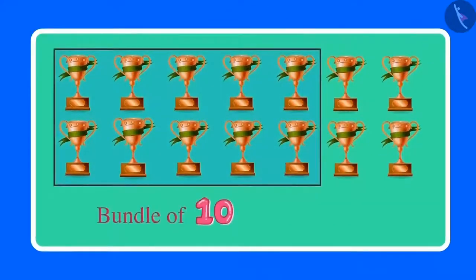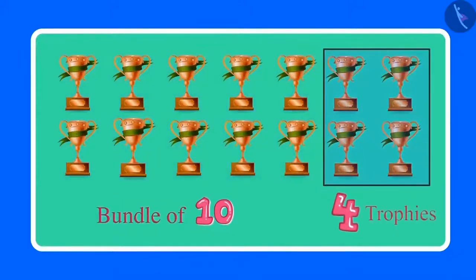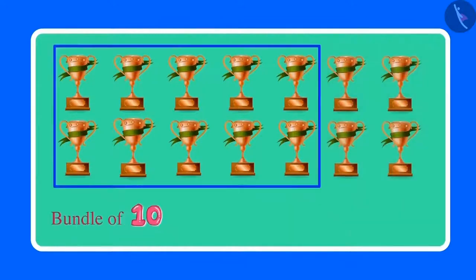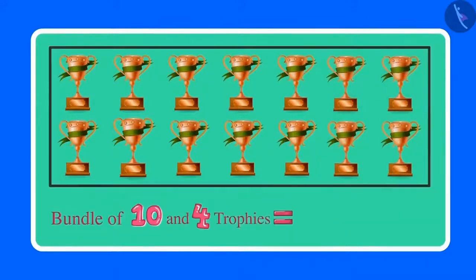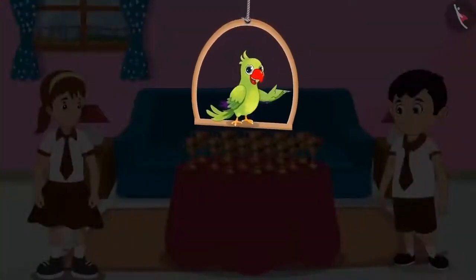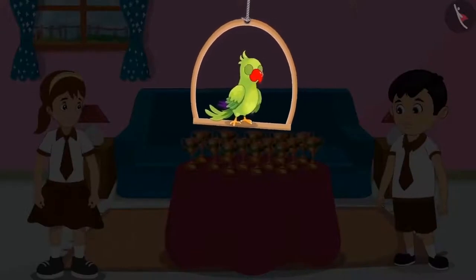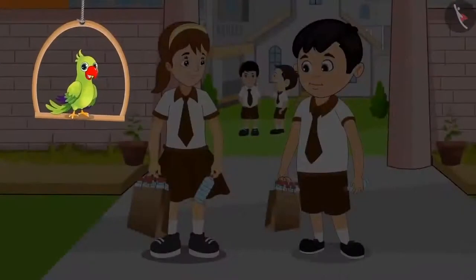These are 10 trophies and we can make one bundle of 10 trophies. Apart from this, there are 4 more trophies. This means that Chotu has one bundle of 10 and 4 more trophies — that is 14 trophies in total. Even you had the same answer, right? Very good. Come on, now let us go to Chotu and Aarti's school.